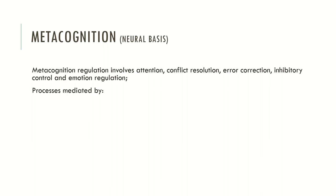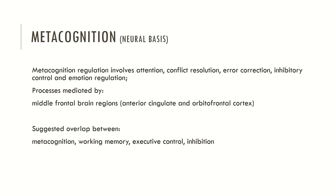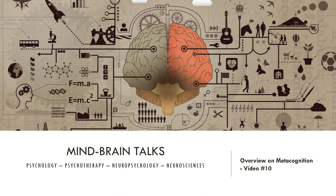Metacognition involves the regulation of attention, conflict resolution, error correction, and inhibitory and emotional regulation. We know from neuroscience methods that these processes are mediated by the medial frontal brain regions, such as the anterior cingulate cortex and orbitofrontal cortex. There is also some overlap of metacognition with other executive functions because of the overlapping brain structures underlying these processes, such as working memory, executive control, cognitive inhibition or behavioral inhibition. This is why the frontal lobe has a very important role in the regulation of higher order mental abilities — it is the more developed part of the brain proposed to underlie these kinds of higher order neurocognitive processes.